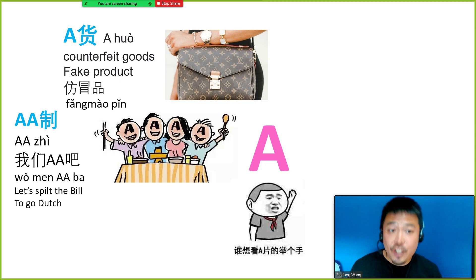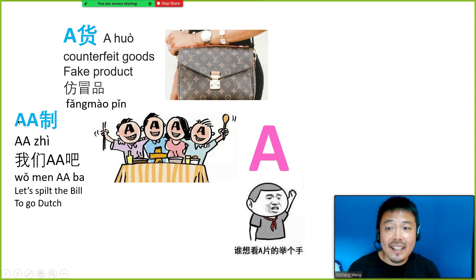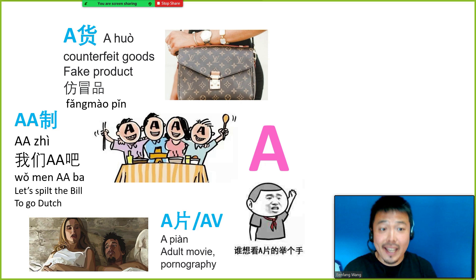The next one will be AA制 (AA zhi), or AA, which means to split the bill. Normally if we are going out with one or two friends to a restaurant, this time I pay, next time you pay — we take turns. However, if we are going out with a bigger group, then we normally will split the bill. In that case we will say 我们AA吧, meaning let's go Dutch, let's split the bill.